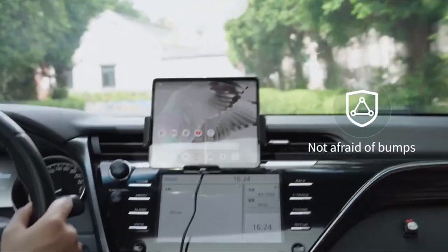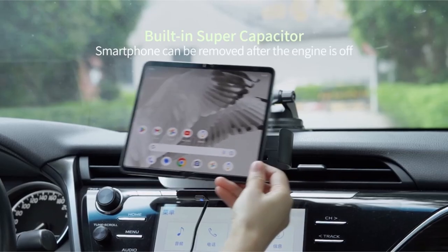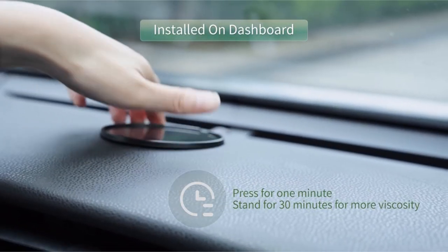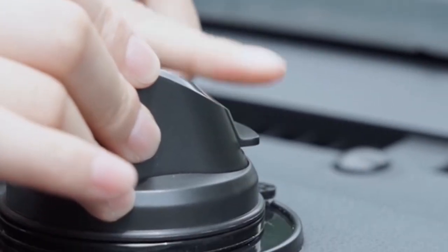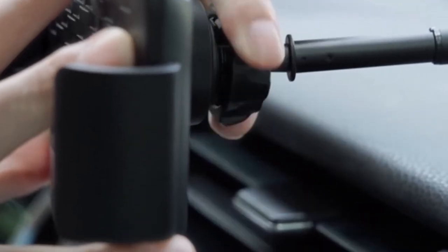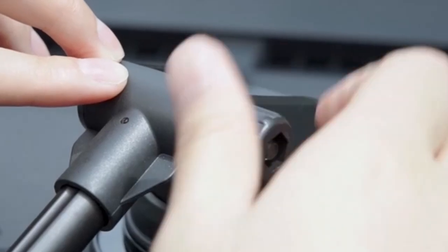Whether you prefer to mount it on your dashboard, air vent, or window, the Andabill's charger offers a secure and stable hold. The intelligent clamping technology and built-in capacitors simplify the charging process, making it a user-friendly option. With its combination of fast charging, versatile mounting, and intelligent features, the Andabill's wireless car charger is a practical and reliable accessory for any Pixel 9 Pro XL owner.